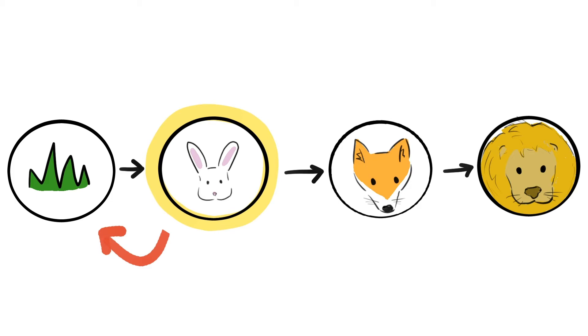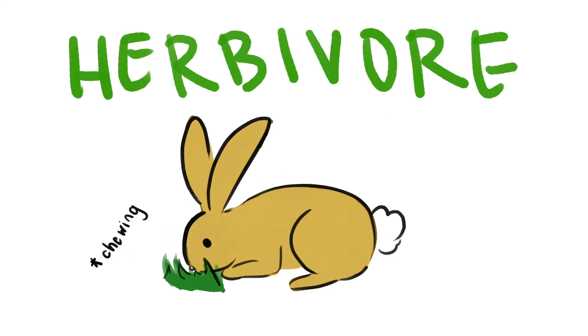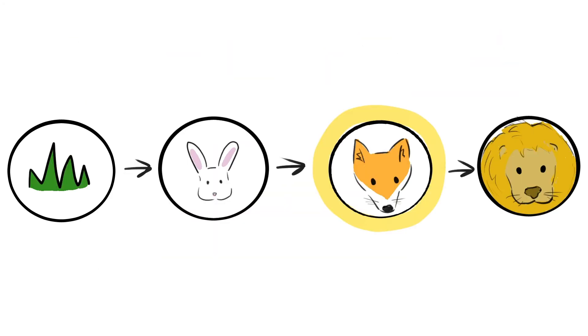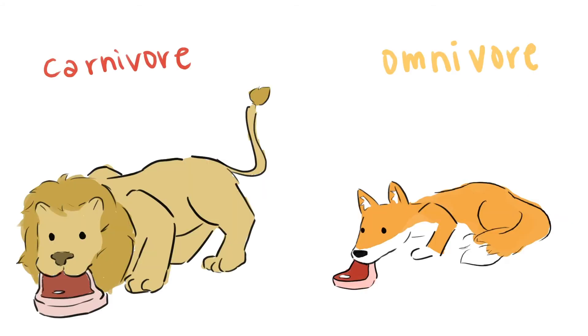Primary consumers are usually herbivores, since they have to eat the producers, which are usually plants. Then, the secondary consumer has to be the fox, and the tertiary consumer must be the lion. As you might have guessed, secondary and tertiary consumers are usually omnivores or carnivores, since they have to eat meat.